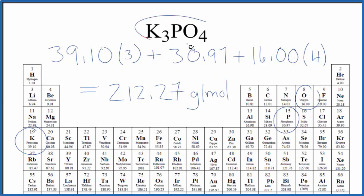That means if we have one mole of potassium phosphate, it's going to weigh 212.27 grams. Note that my periodic table goes out to two decimal places. If yours goes out more or less, you might get a slightly different answer.